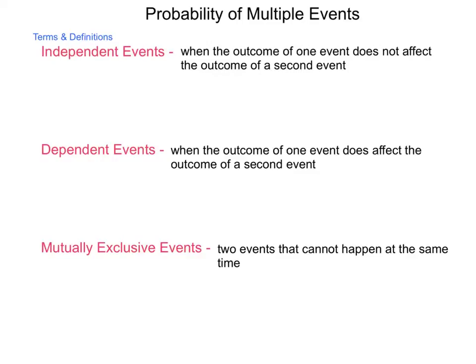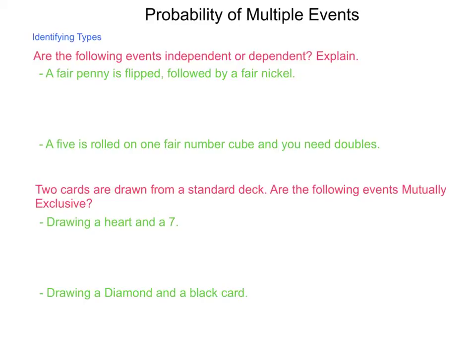So let's start by getting some practice on identities. Are the following events independent or dependent and explain? A fair penny is flipped followed by a fair nickel. Does the result of the penny have any influence on what happens with the nickel? And the answer is no. So these are independent. The reasoning is that one outcome does not have influence on what the other one does. Just because the penny comes up heads doesn't change the fact that the nickel has equally likely opportunity for heads or tails.